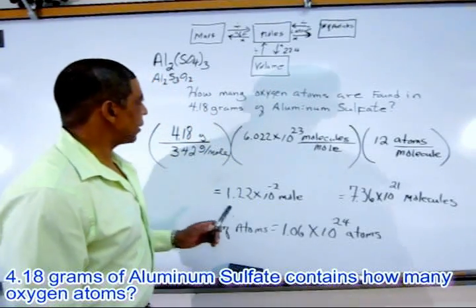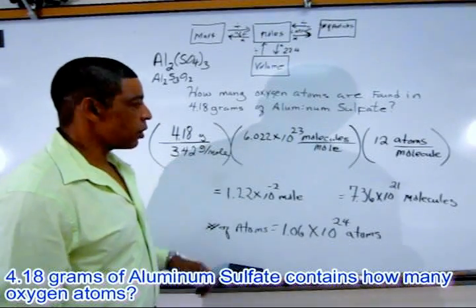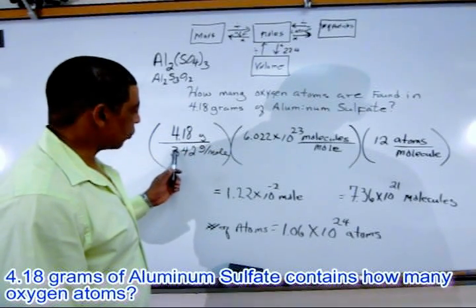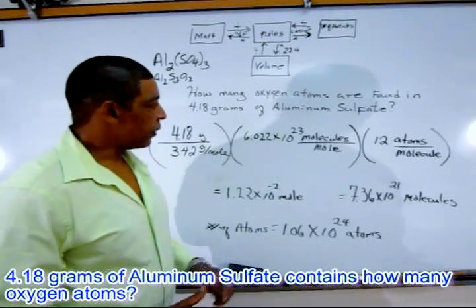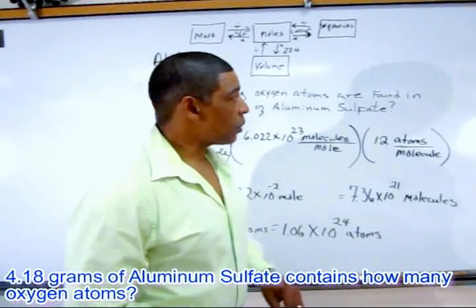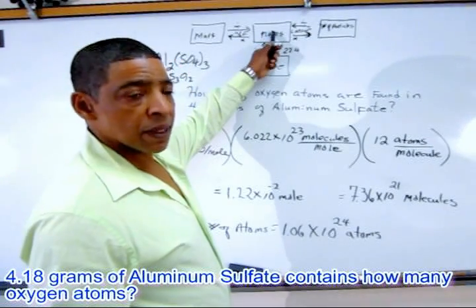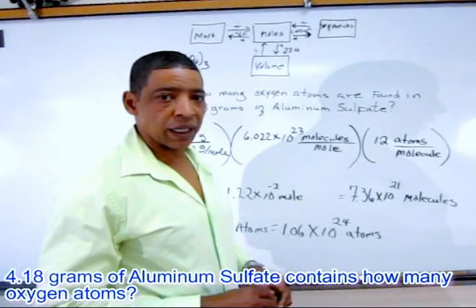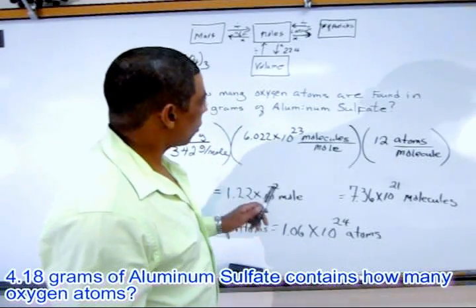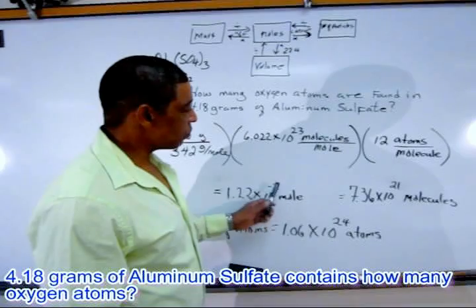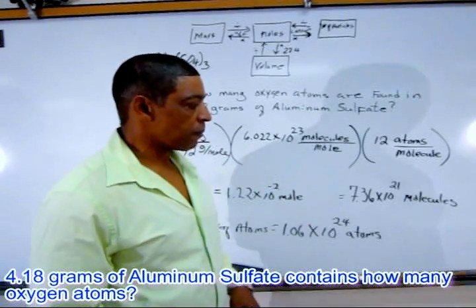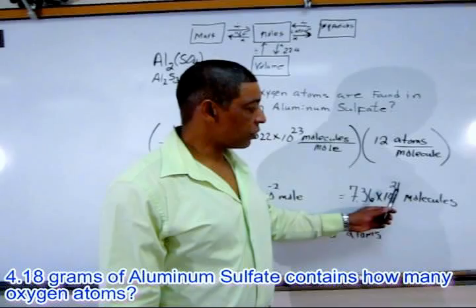Now that we know the molar mass is 342 grams per mole, we may proceed. 4.18 grams divided by 342 grams per mole equals 1.22 times 10 to the negative 2 moles. On the mole map, this places us in the middle box. Now we multiply by Avogadro's number — 6.022 times 10 to the 23 molecules per mole — which equals 7.36 times 10 to the 21 molecules.